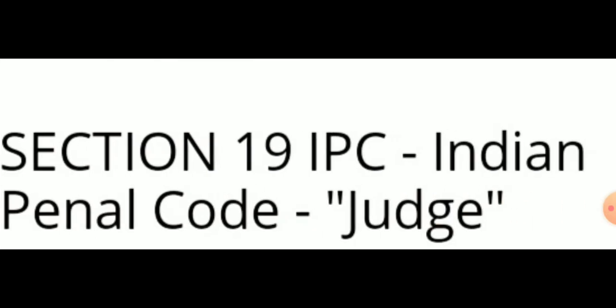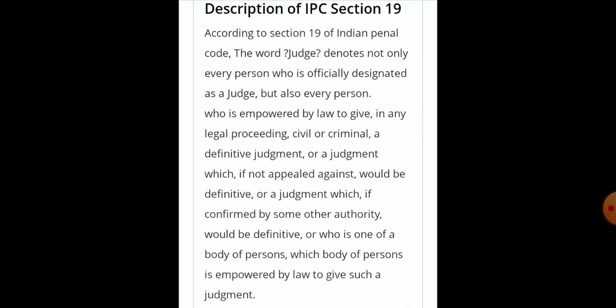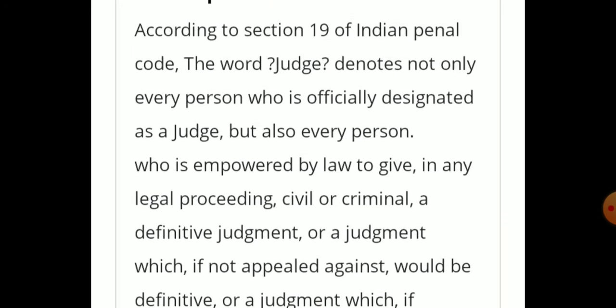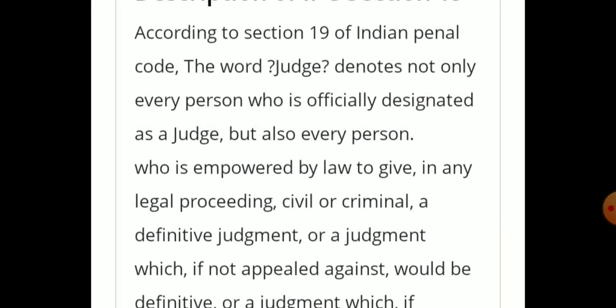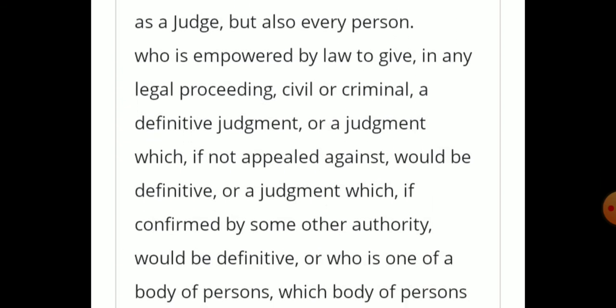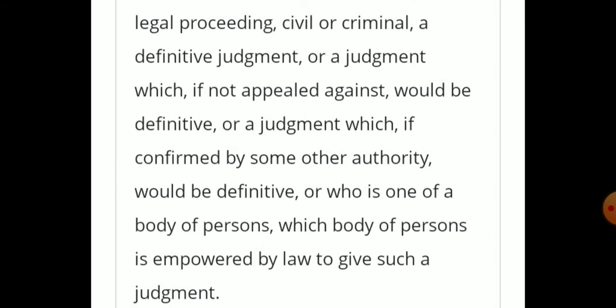Section 19 defines 'Judge'. According to Section 19 of the Indian Penal Code, the word 'judge' denotes not only every person who is officially designated as a judge, but also every person who is empowered by law to give, in any legal proceedings whether criminal or civil, a definite judgment, or a judgment which if not appealed against would be definitive, or a judgment which if confirmed by some other authority would be definitive, or who is one of a body of persons which body of persons is empowered by law to give such judgment.